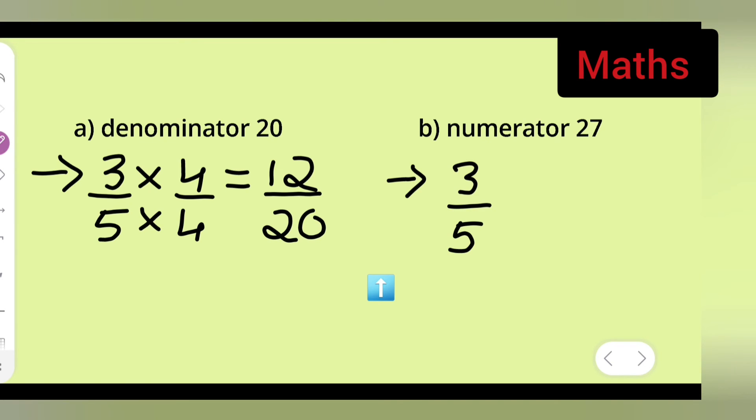Multiply it with both numbers. To get 27, you have to multiply it with 9 both numbers. So you will get 3 nines are 27 upon 5 nines are 45.